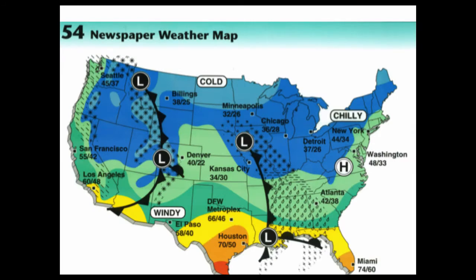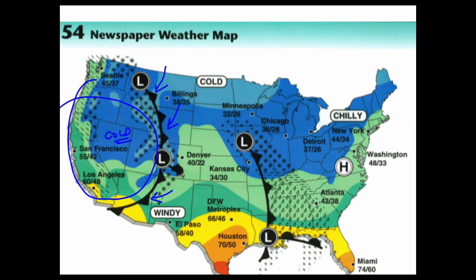Let's move on to this weather map. Basically there's no color here, so it's important for you to realize that even though you may be looking at weather maps that don't have color, what you want to look for would be these little triangular symbols, which tell you this is a cold front, because the triangular symbols indicate the front of a cold air mass. So this is a large area of cold air.